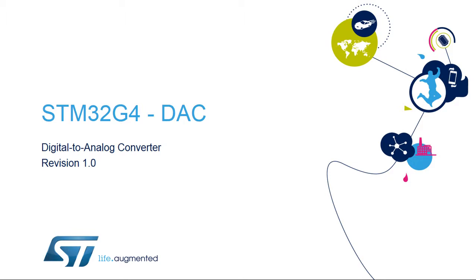Hello and welcome to this presentation of the STM32G4 Digital to Analog Converter. This block is used to convert digital signals to analog voltages, which can interface with the external world and also with on-chip peripherals such as comparators and operational amplifiers.